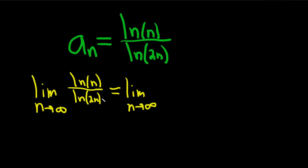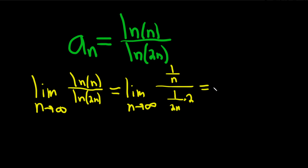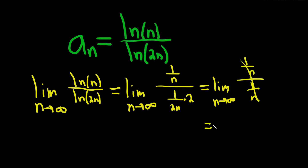We have infinity over infinity and there's nothing funky going on. Taking the derivative of ln(n) we have 1/n. Taking the derivative of ln(2n) we have 1/(2n) times the derivative of the inside, which is 2 — chain rule. Again, we're pretending these are x's. So here we have (1/n) over (1/n); they cancel, giving us the limit as n approaches infinity of 1, which is just 1.